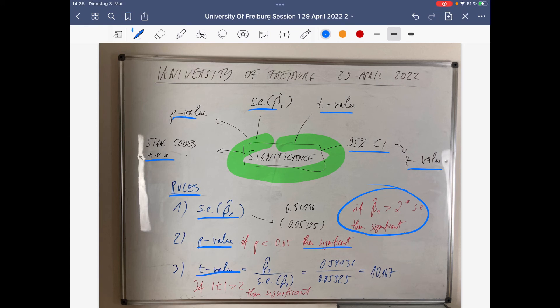Once the t-value, which is a ratio between the estimated regression coefficient and the estimated standard error, is above 2, if the t-value is above 2, then the regression coefficient is significant.